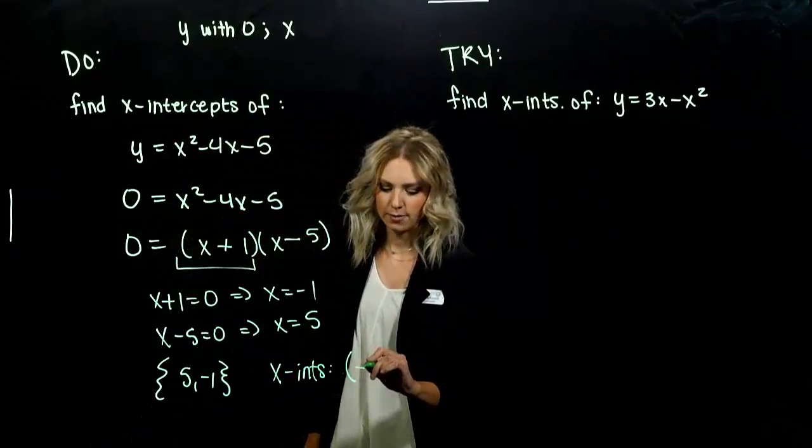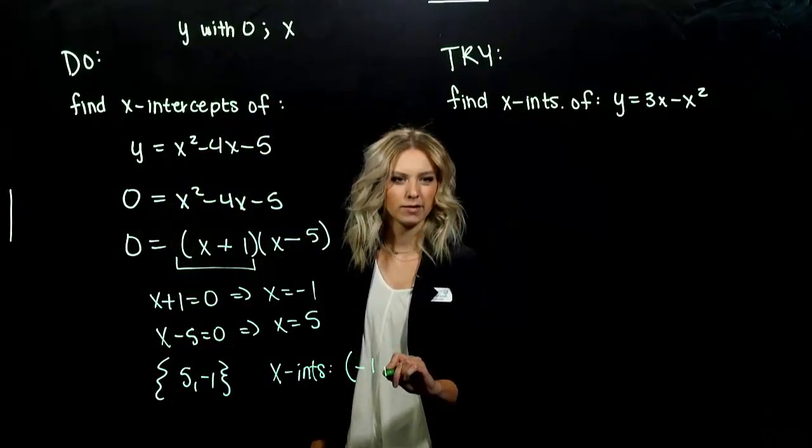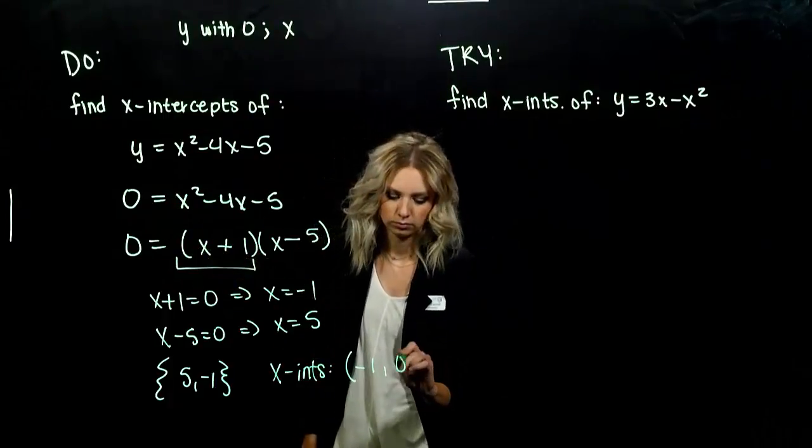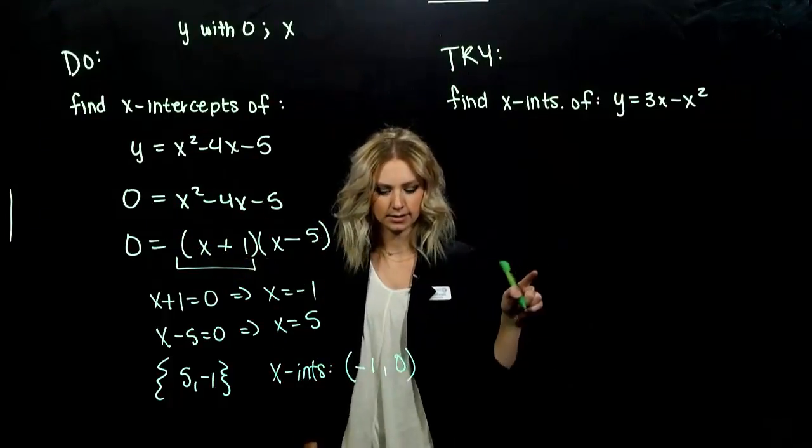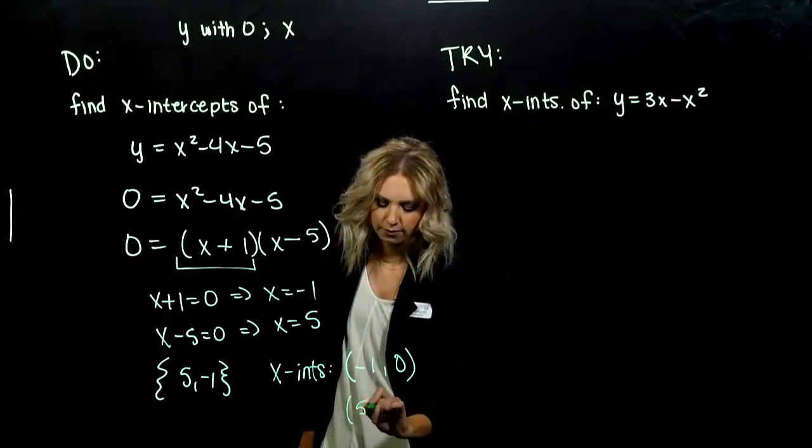So my first x-value, negative 1, what was my y-value? 0. It's moving along that axis. And the other one happens at 5, 0.